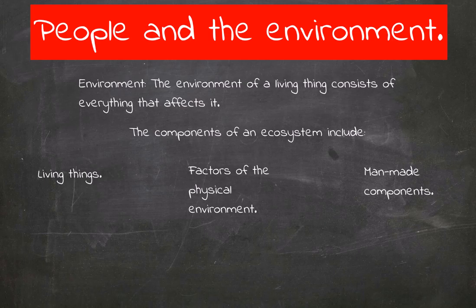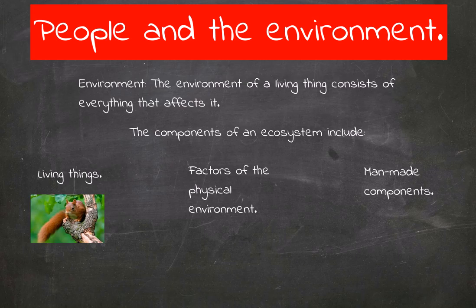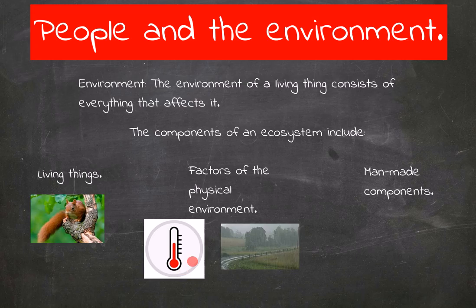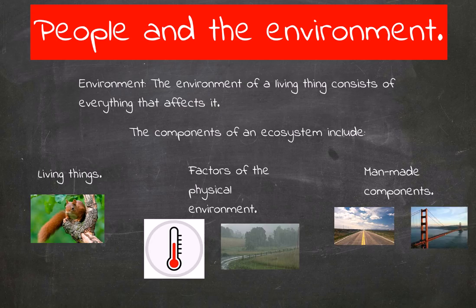The environment of a living thing consists of everything that affects it. The components of an ecosystem include living things, for example the squirrel and also the tree where it lives. Factors of the physical environment, such as temperature and rainfall, and also man-made components: roads, bridges, buildings.